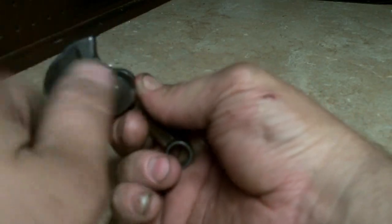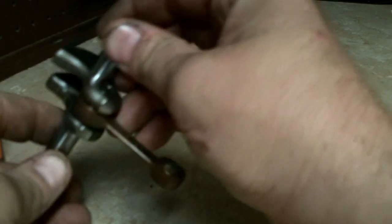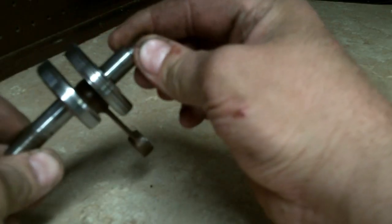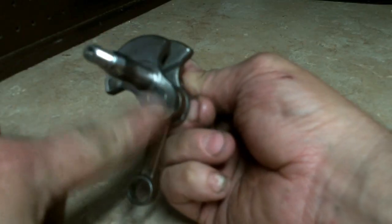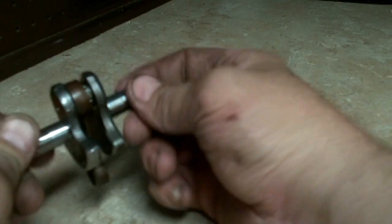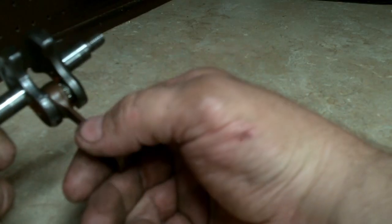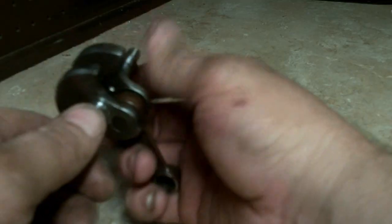Basically what has happened is this counterbalance has slipped on the crank pin. Now this is not a replaceable part. When you buy this, you buy the rod, the rod bearing, and the crankshaft all in one piece.